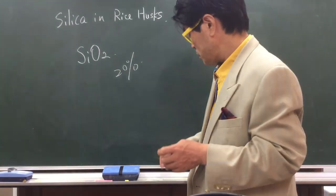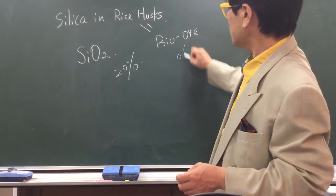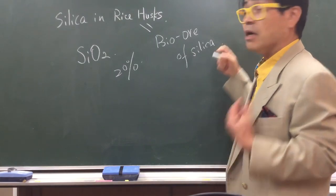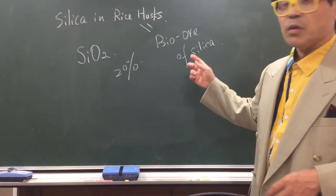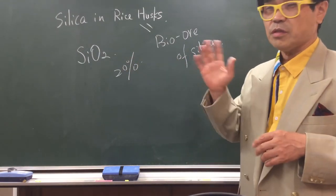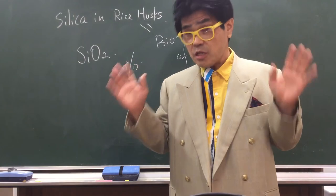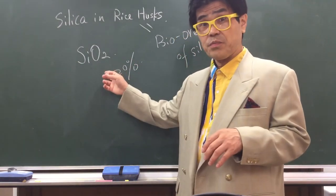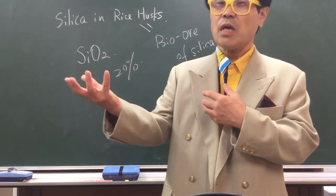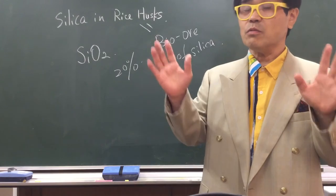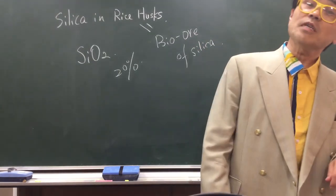We call rice husk the bio-ore of silica, because it contains a lot of silica. So rice husk is not waste — rice husk is a resource, especially a resource of silica. Don't waste rice husk — treat it properly, get silica, you can even sell it. It's a wonderful system! Okay, that's all for today, see you next time, bye bye!